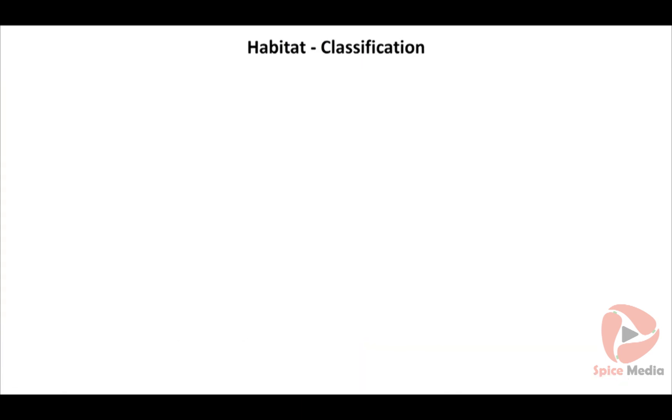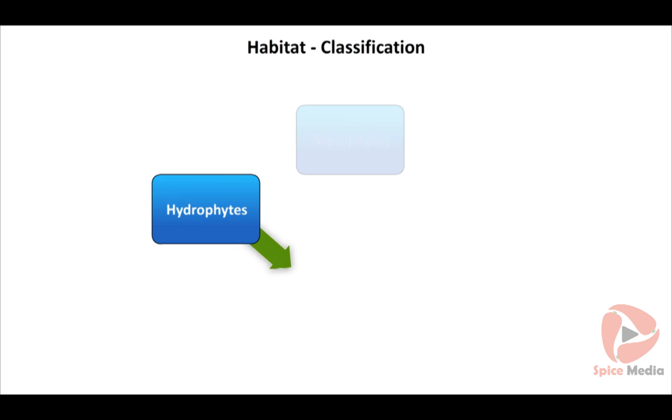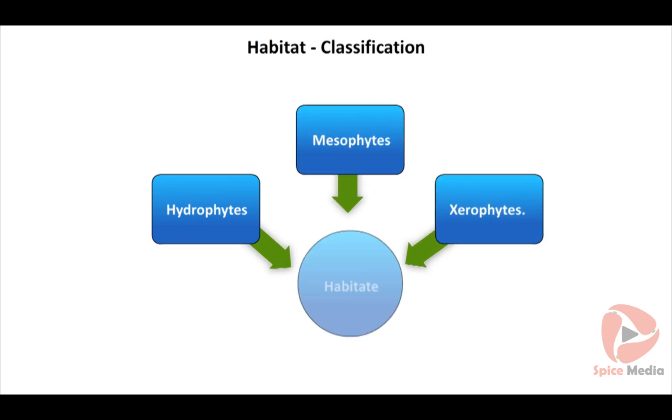In 1909, Warming classified the plants into three types on the basis of their water requirement. They are hydrophytes, mesophytes, and xerophytes.